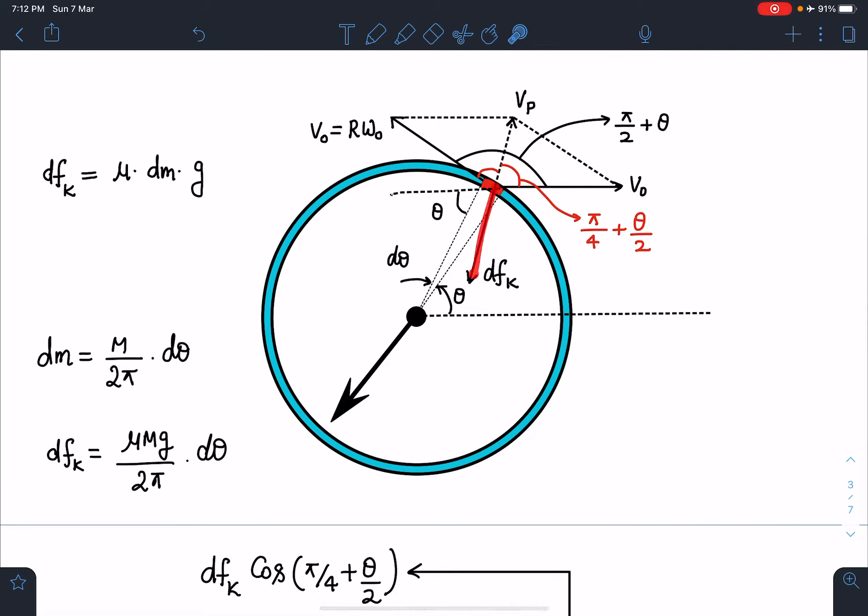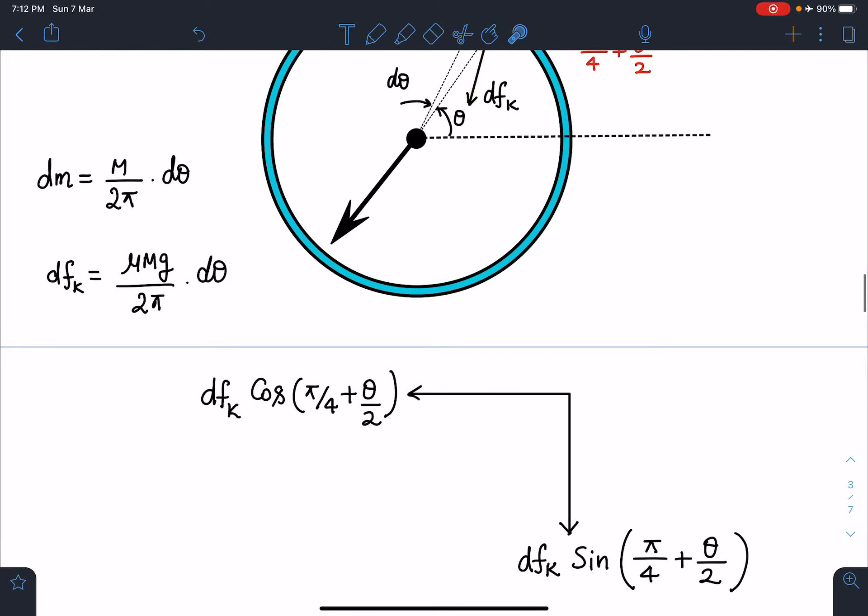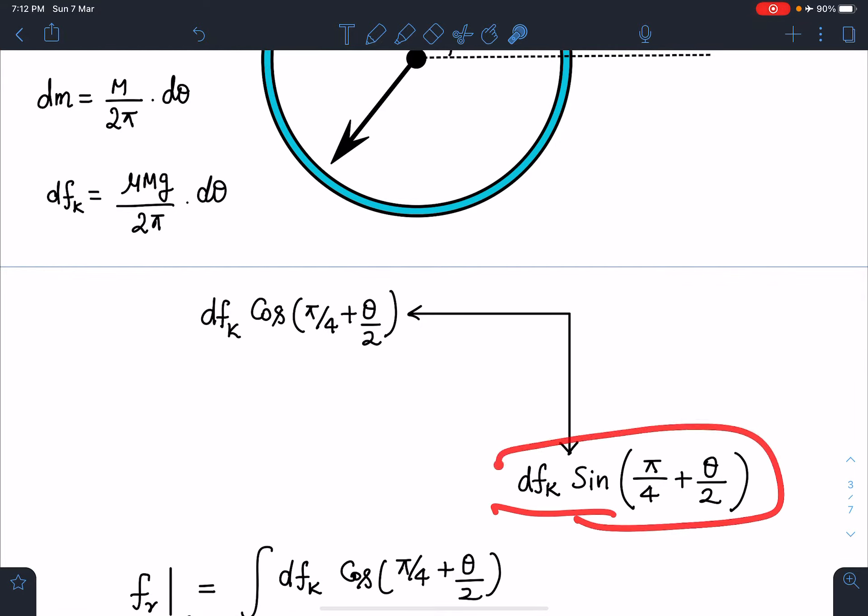I can resolve this dfₖ into two parts. This angle is π/4 plus θ/2. I can write this x-component of friction, I am taking towards minus x. This will become dfₖ cos(π/4 + θ/2). Similarly, this will become dfₖ sin(π/4 + θ/2).